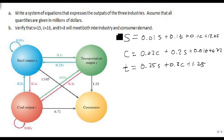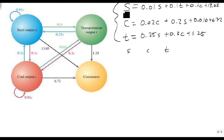We now have this system, but we don't like that system. We like it to be in an SCT format, so what we'll do is we'll subtract over, and if we subtract over 0.01, that gives us 0.99s minus 0.1c minus 0.1t is equal to 13.05. Do the same thing with our second equation, we get minus 0.2s plus 0.98c minus 0.01t equals 6.72.